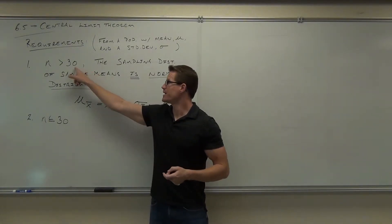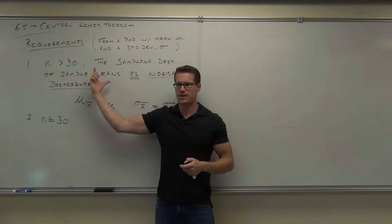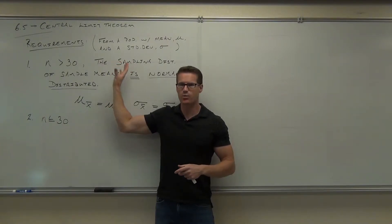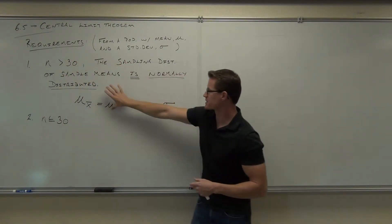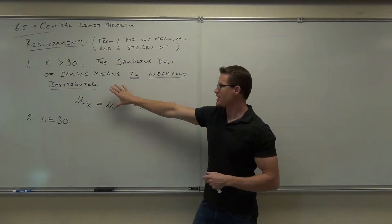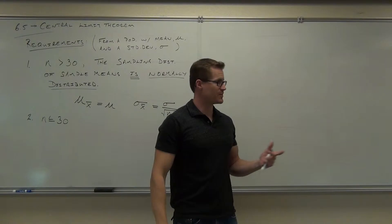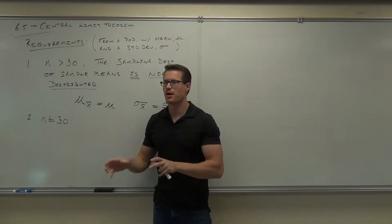If N is greater than 30, I told you this is going to be an automatic truth. No matter what your population looks like, this will happen. If this doesn't happen, we have to make another claim. You have to actually say something about the population.